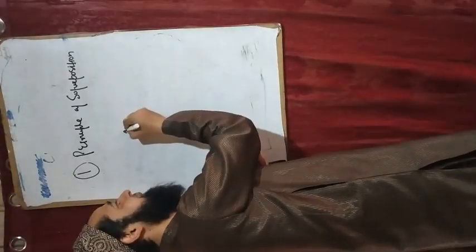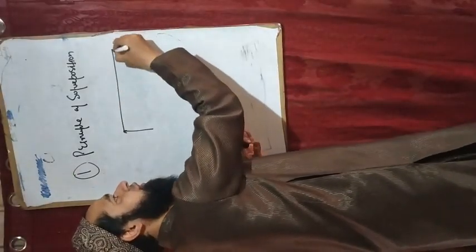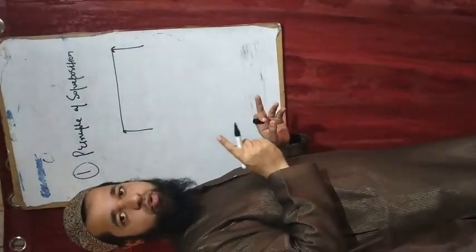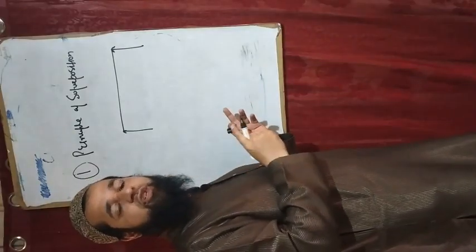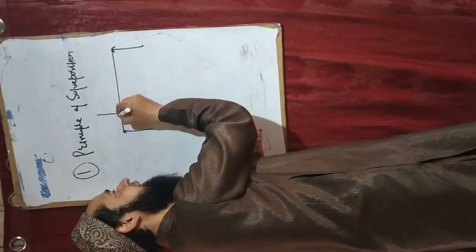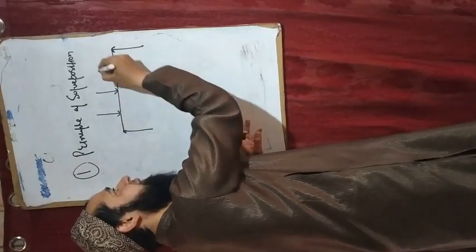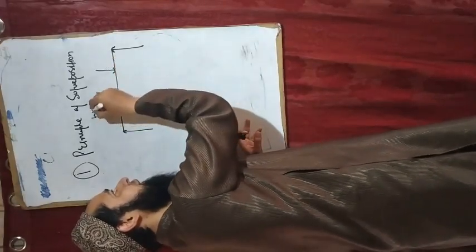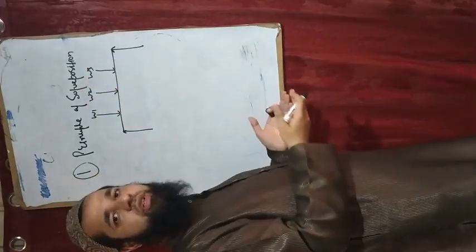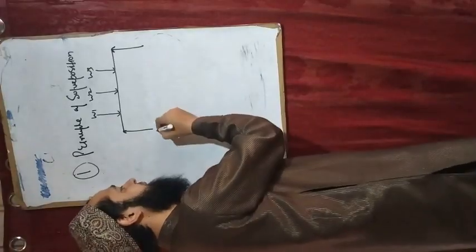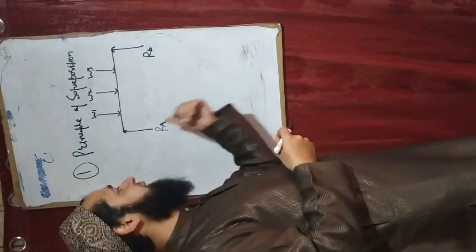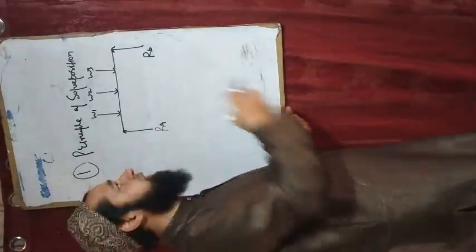If you have a beam or any structure, it must be a linear elastic structure — there should be a linear elastic variation. If you don't have linear elastic variation, then you will have different point loads: W1, W2, W3. Or we can have a truss. The reactions are RA and RB under these different point loads.